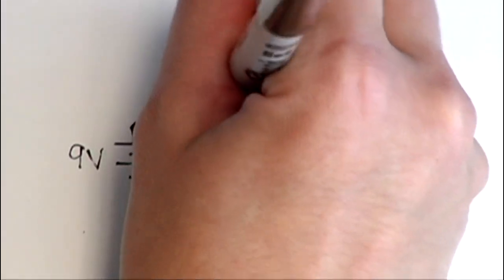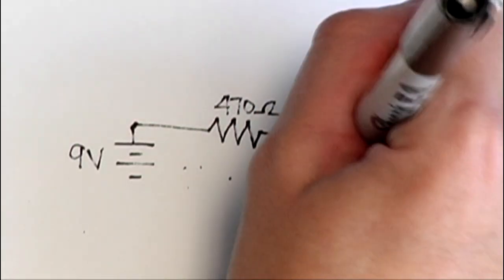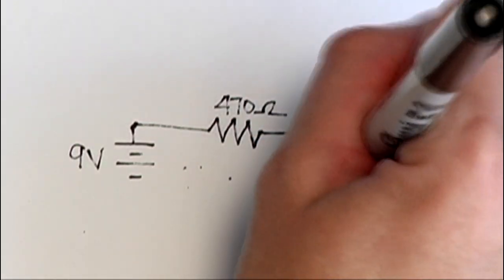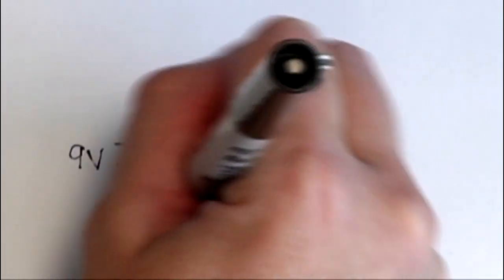Let's start small with a simple LED circuit. Included in the schematic is a 9 volt battery, 470 ohm resistor, and an LED. Now how would we wire this on a breadboard?